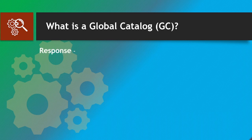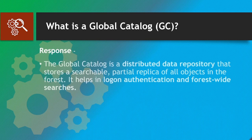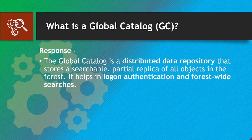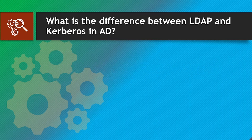Moving on: What is a Global Catalog (GC)? Response: The Global Catalog is a distributed data repository that stores a searchable partial replica of all objects in the forest. It helps in logon authentication and forest-wide searches. Next: What is the difference between LDAP and Kerberos in AD?